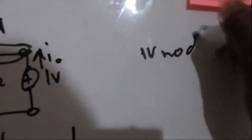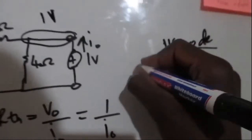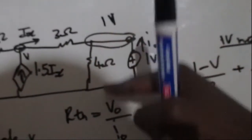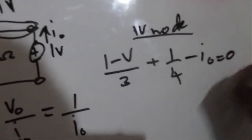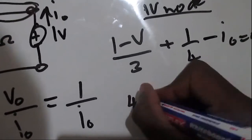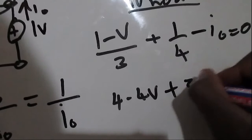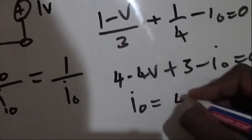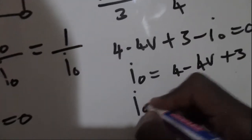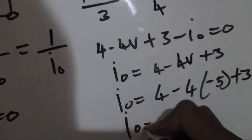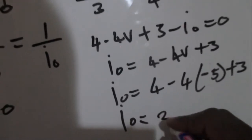At the 1-volt node, applying KCL: (1 − V)/3 + 1/4 − Io = 0. Multiplying through by 12: 4 − 4V + 3 − Io = 0, so Io = 4 − 4V + 3 = 4 − 4(−5) + 3 = 4 + 20 + 3 = 27.